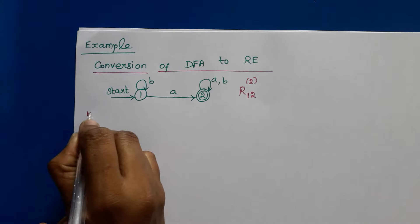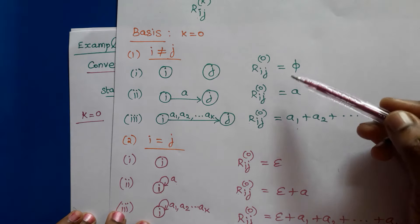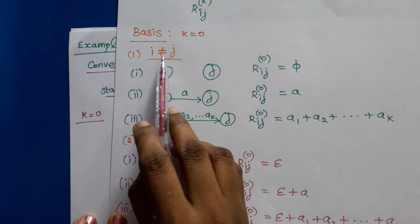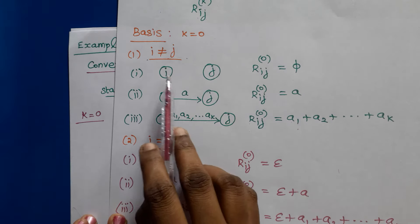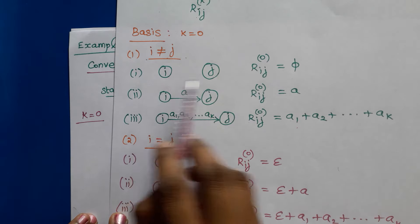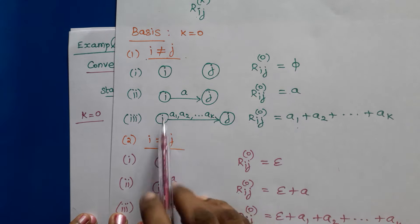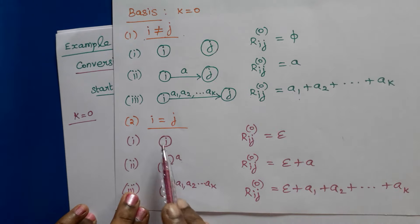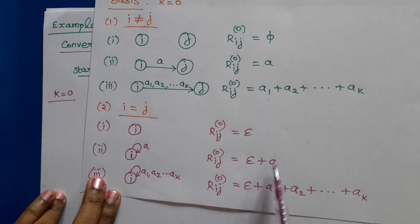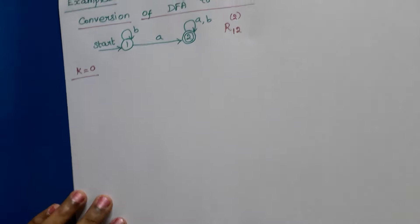We have to start with k equals 0, considering the basis formulas. There are six cases, which we discussed in the last video. For k equals 0, there are two conditions: i is not equal to j, and i may be equal to j. If i is not equal to j and there is no transition, the result is phi. A single transition means that symbol alone. For k transitions, it is the union of all symbols. If i equals j, no transition gives epsilon, single transition gives epsilon plus a, and k transitions give epsilon plus a1 plus a2 up to ak.